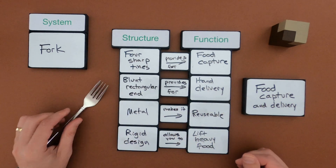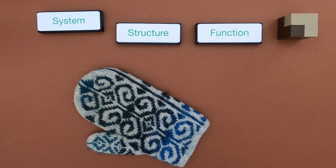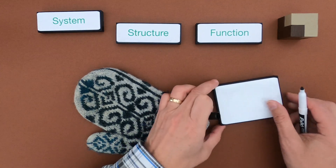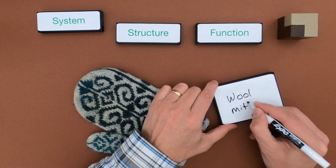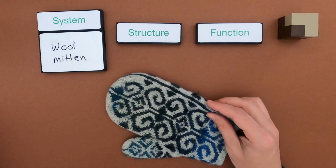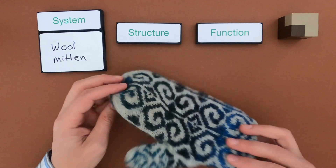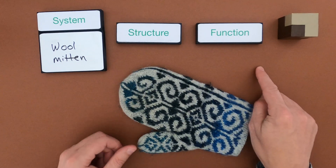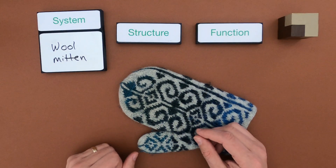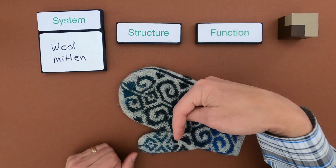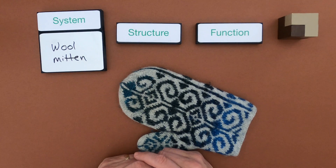I'm going to clean this off and then give you a chance to do the same thing with a wool mitten. Now that you've seen me show my thinking around structure and function with a fork, I'd like you to do the same thing using this wool mitten. The system is the wool mitten. Think about what is the overall function and then start going through the different structures — how is it made, what does it look like, and then the individual functions. You could show me your thinking using the thinking slides that are down below. Pause the video, go do that, and then come back and let's see how our thinking matches up.